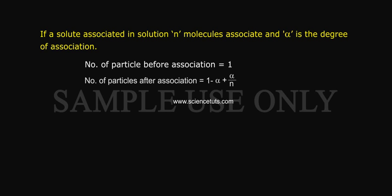If a solute associated in solution, N molecules associate, and alpha is the degree of association. Number of particles before association is equal to 1. Number of particles after association is equal to 1 minus alpha plus alpha by N. Van't Hoff Factor I is equal to 1 minus alpha plus alpha by N by 1.